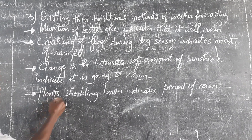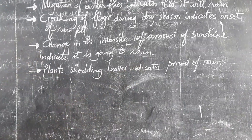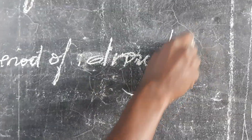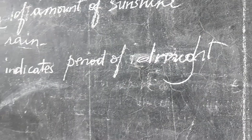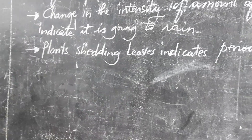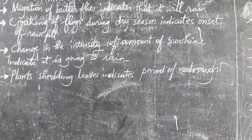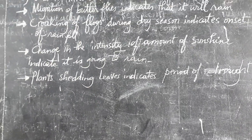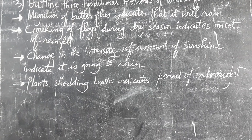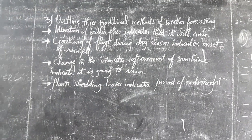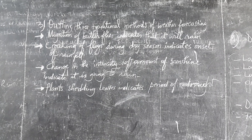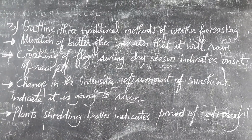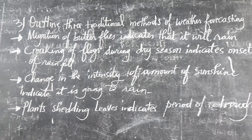Another method: plants shedding their leaves indicates a period of drought or dry season. During dry season, trees shed off their leaves. So when people observed trees shedding their leaves, they imagined that rainfall was going to cease and that a dry season was coming. Even people today still use this method of predicting atmospheric conditions — when plants start shedding their leaves, it indicates that the dry season is about to begin.